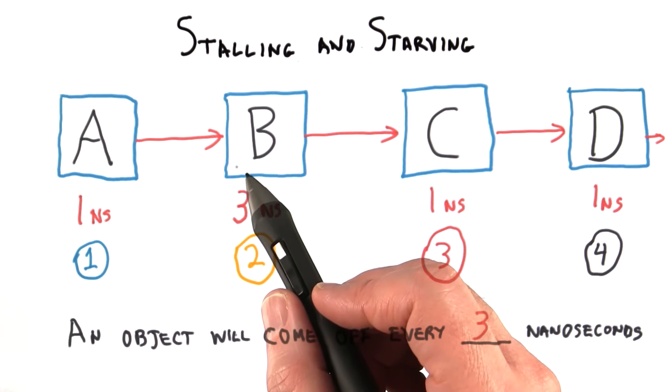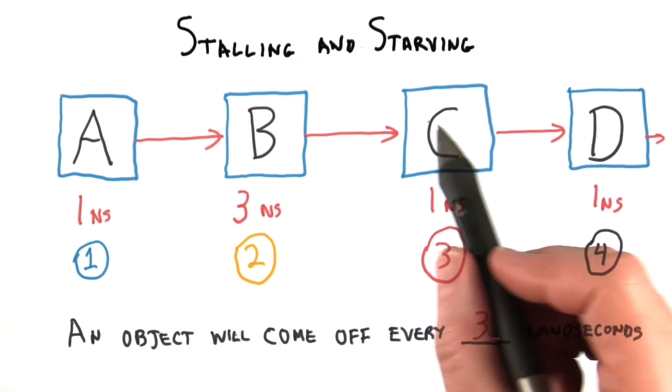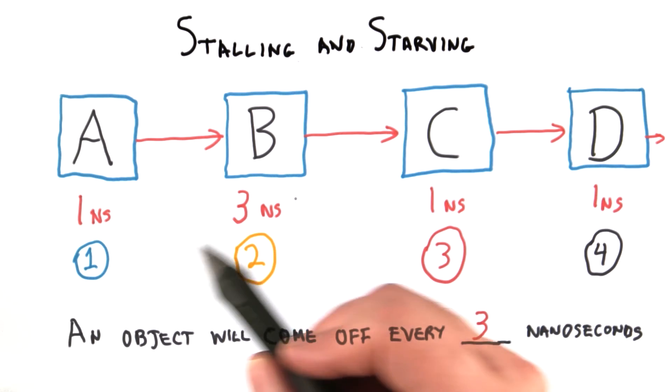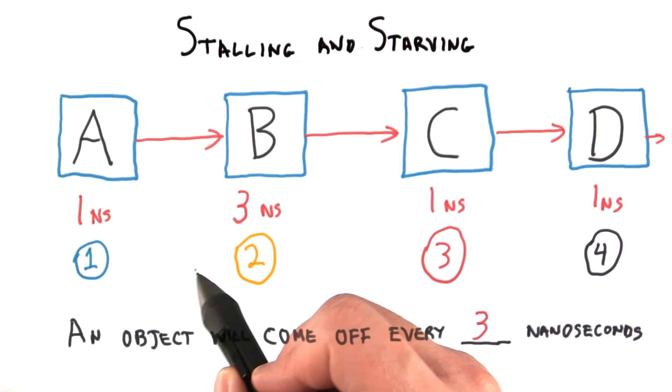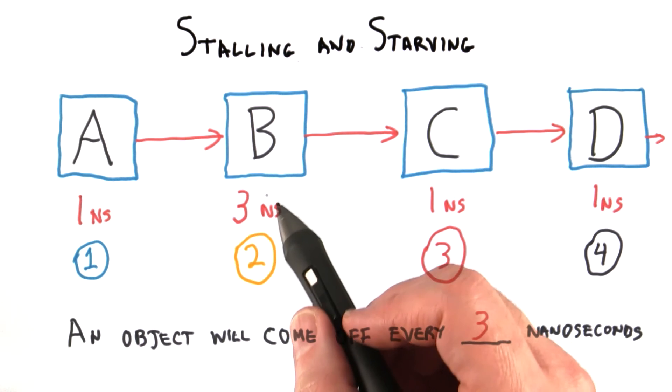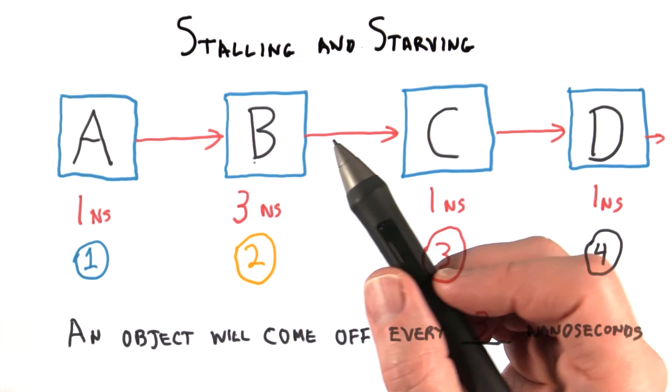The bottleneck will change over time, with sometimes one stage being the slowest, sometimes another. GPU designers use different techniques to perform load balancing, such as first in, first out queues, where you sort of stack up a bunch of objects so that if the stage suddenly gets faster, a bunch of objects can move into it quickly, or other techniques such as unified shaders.